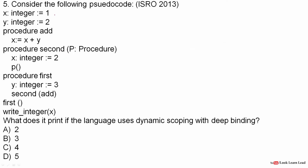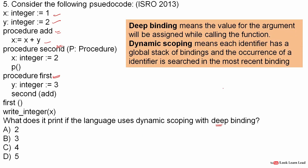Next question: consider the following pseudocode. We have two integers and a procedure x plus y. There is a procedure first, a procedure second, and a procedure add. We are calling first and printing the integer x. The question asks what it prints if the language uses dynamic scoping with deep binding. Deep binding means the value of the argument is assigned when the function is called. Dynamic scoping means each identifier has a global stack of bindings and the most recent binding is used.